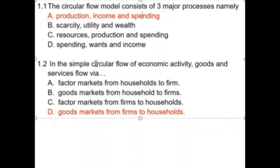In the simple circular flow of economic activity, goods and services flow via the goods market from the firms to the households. If I'm at home and I want to go and eat a burger at McDonald's, that burger goes from the firm — the business — to the household through the goods and services market.